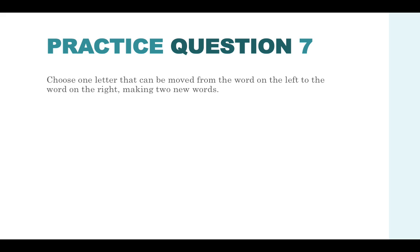Practice question seven. Choose one letter that can be moved from the word on the left to the word on the right, making two new words. We've got the word drink and the word free. Which letter can be moved from the first word to the second word in order to make two new words?